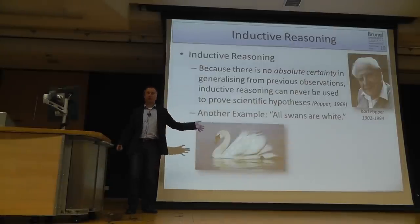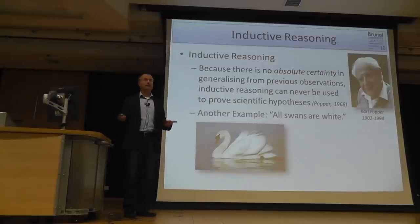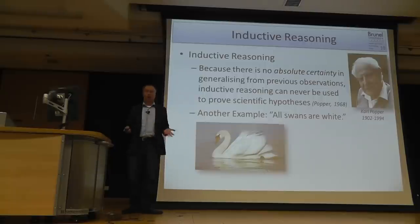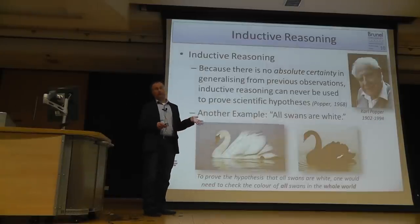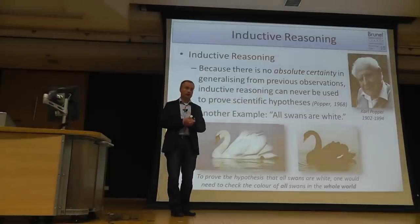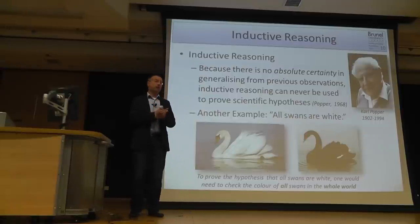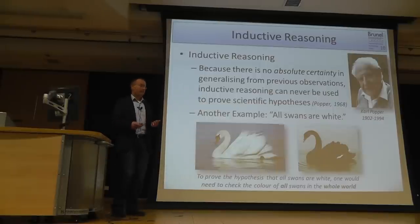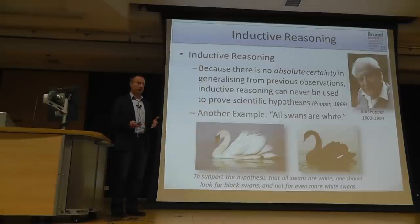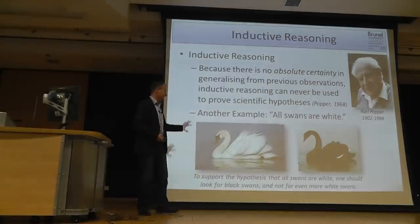From our experience we know that many, many swans are white. But to really prove the hypothesis that all swans are white, we would need to check the color of every single swan in the whole world. Popper suggested: if you're really going for that hypothesis, actually try to find black swans. Do experiments to disprove your hypothesis. If you fail to do so, then you provide more evidence in favor of your hypothesis.